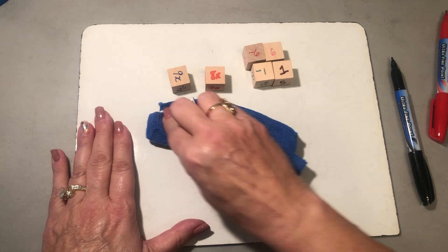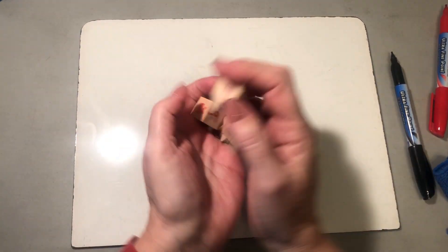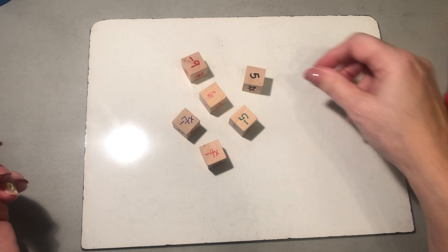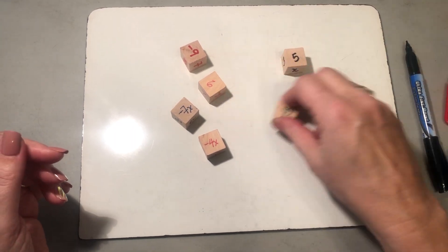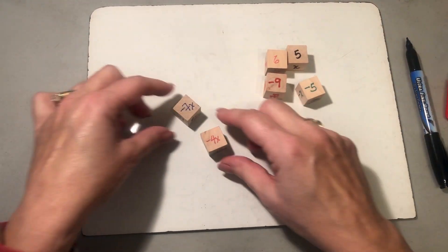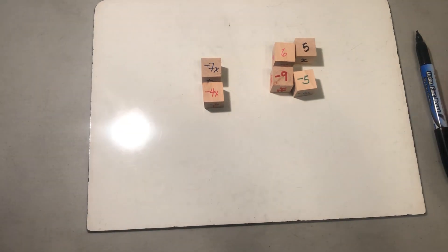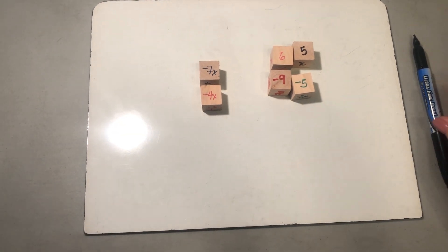Then we do it kind of together so you get the hang of it, and hopefully we'll get some more numbers in here. Okay, so I have the numbers over here and then I put the variables together. So now we've kind of combined like terms but now we need to simplify.